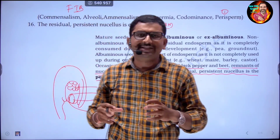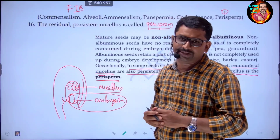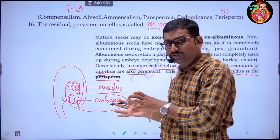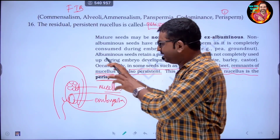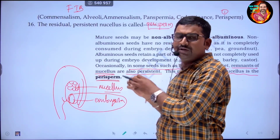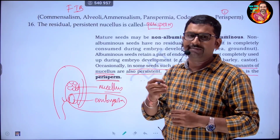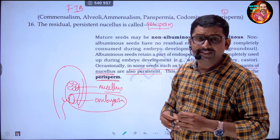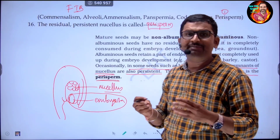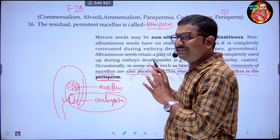As seed formation occurs, the nucellus outside the embryo sac is called perisperm, just like in black pepper — called kalimirch in Hindi.